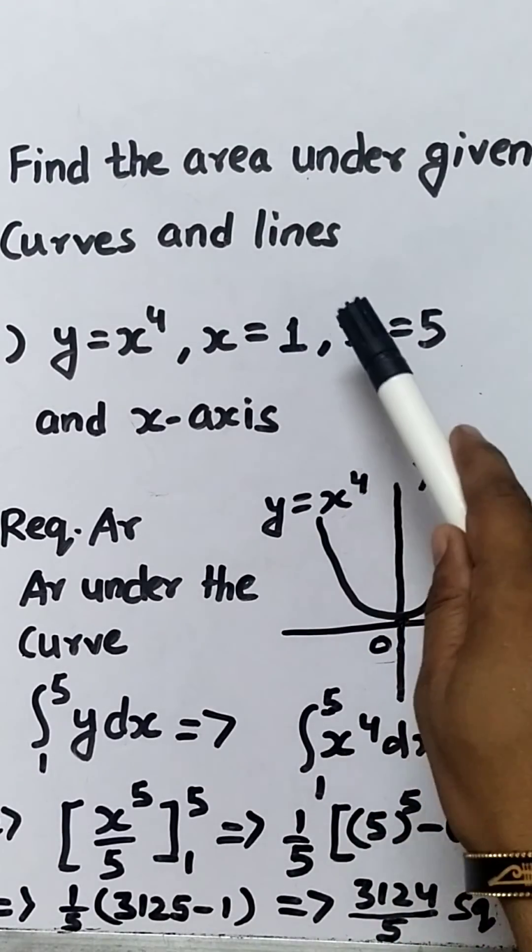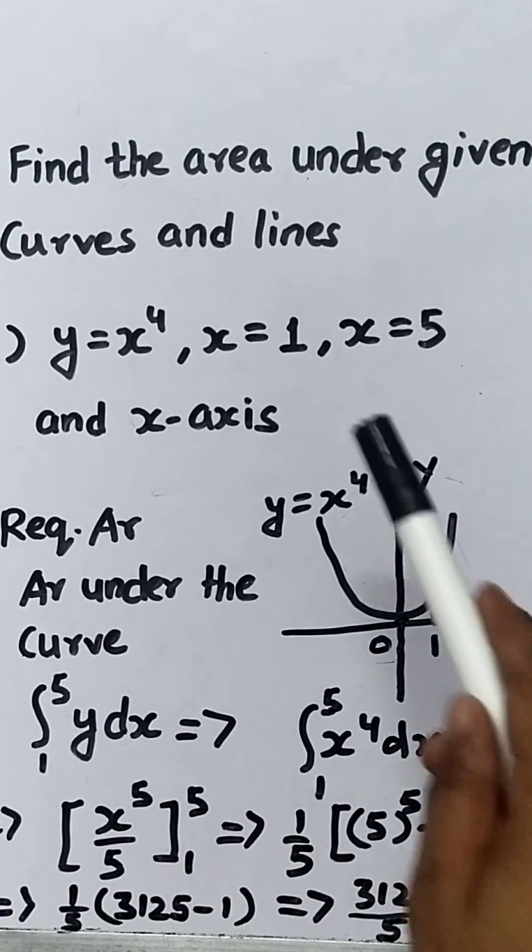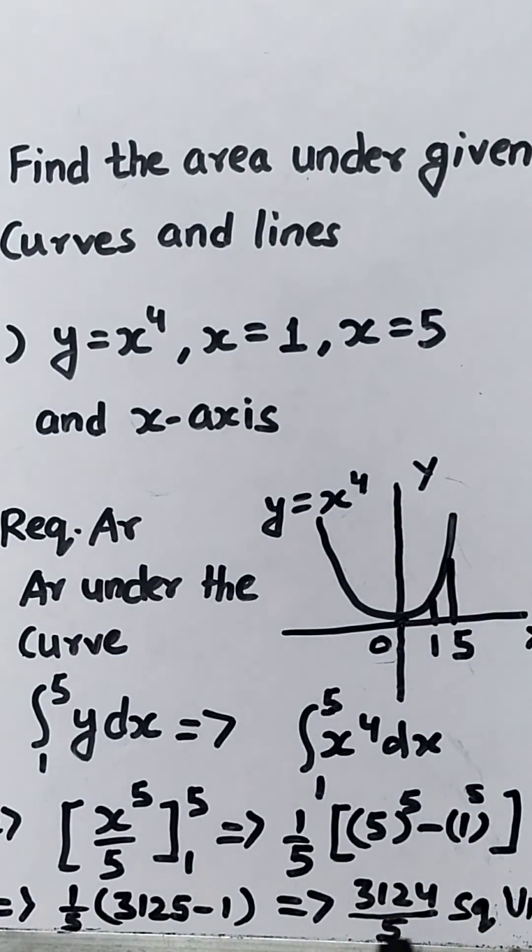So the area under the given curves and lines will be 3124 upon 5 square units. Thank you.